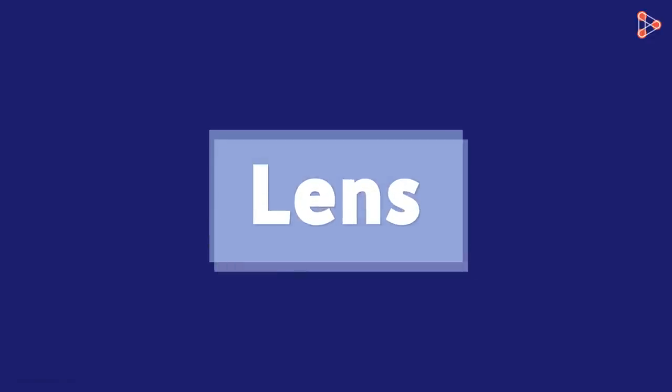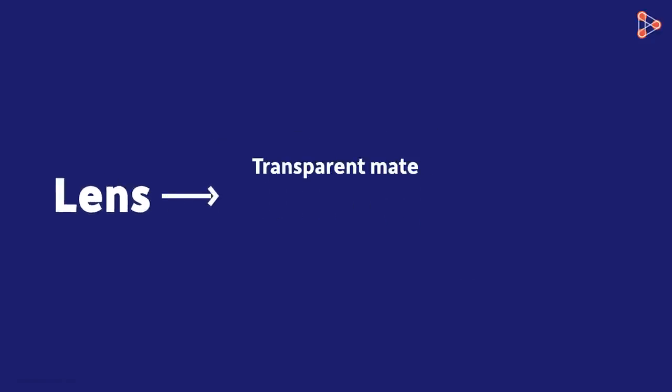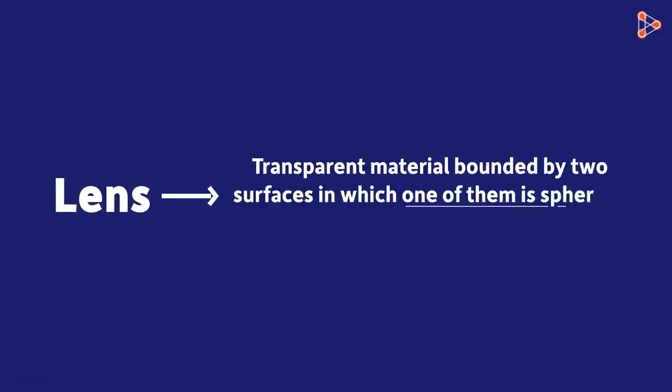In our previous video, we discussed what a lens is and its various types. It is bounded by two surfaces. One of them is spherical and the other is spherical or plane.